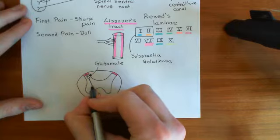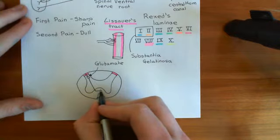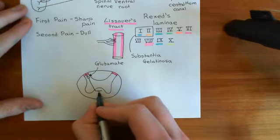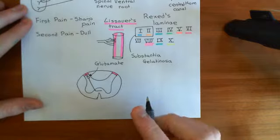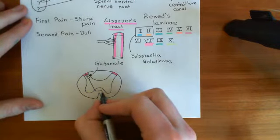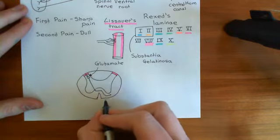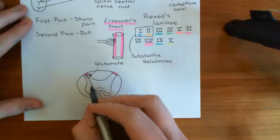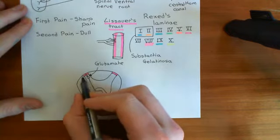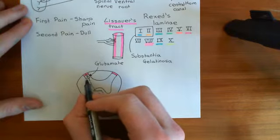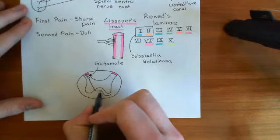This neuron will then send its axon out and go into the anterior commissure — the connection between the two sides, known as the anterior commissure of the spinal cord; don't confuse that with the anterior commissure in the brain. The axon will cross over onto the opposite side of the spinal cord. There will be absolutely loads of these neurons doing the same thing — loads of primary pain neurons coming in, synapsing on these secondary neurons, which then cross in this anterior commissure.